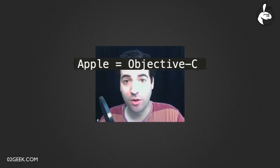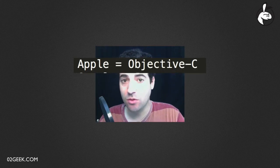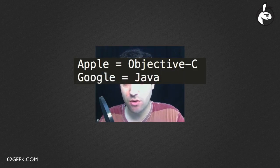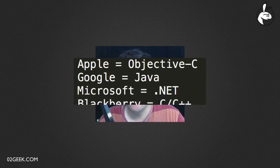The mobile world is even worse these days. If you take, for example, Apple, one of the leading mobile providers, wants you to code in Objective-C. Google wants you to code in Java. Microsoft wants you in .NET. Blackberry's native language is C, C++.